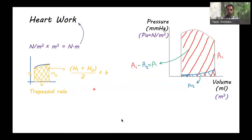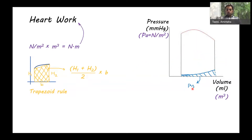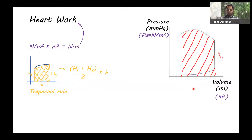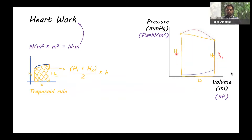Now let's use the trapezoid rule to find A1 and A2. Starting with A2: we form a trapezoid under the bottom curve with h1, h2, and base b, then calculate A2 using that equation. Similarly for A1: we form a trapezoid under the top curve with h1, h2, and base b, and use the same equation to estimate A1.